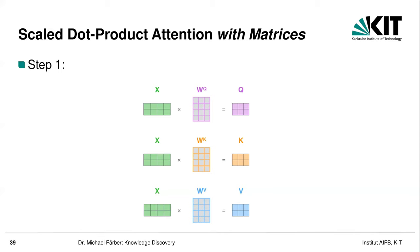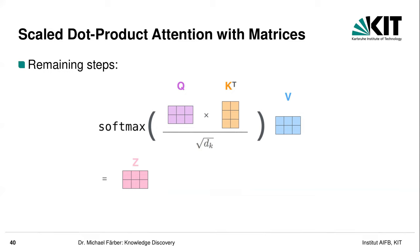In practice, you deal with matrices since matrix multiplication is computationally efficient. You have the input matrix X — a representation of all input embeddings — and multiply it with W_Q, W_K, and W_V to get matrices Q, K, and V. Then steps 3 through 6 become one big step: softmax of Q times K^T divided by 8, multiplied by V, giving you directly the output matrix Z.